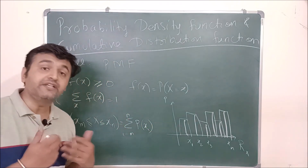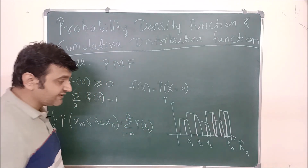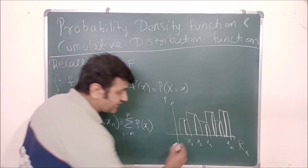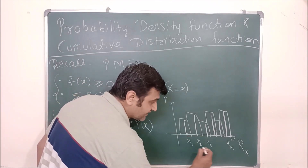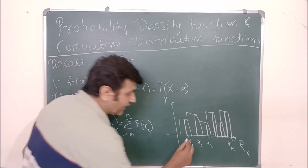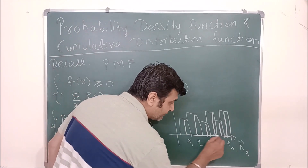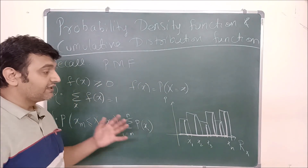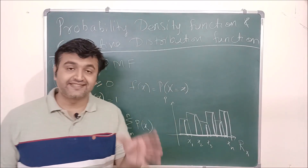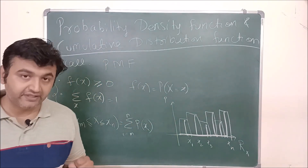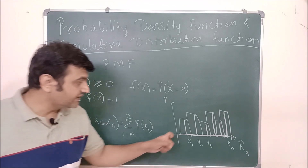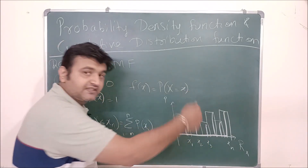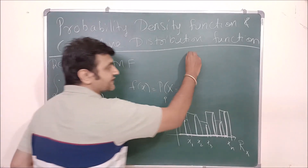Now we are in the continuous case. When you have a continuous random variable, you don't have this discretization — you have a continuation. That means the range set is an interval, a line segment. So obviously the probability distribution will no longer be discrete; it will be a continuous case.